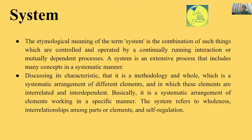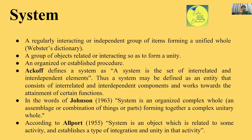The system refers to wholeness, interrelationships among parts and elements, and self-regulation. The system is a self-regulatory system. According to Webster's Dictionary, a system is 'a regularly interacting and interdependent group of items forming a unified whole.'